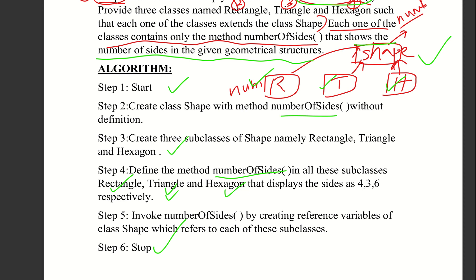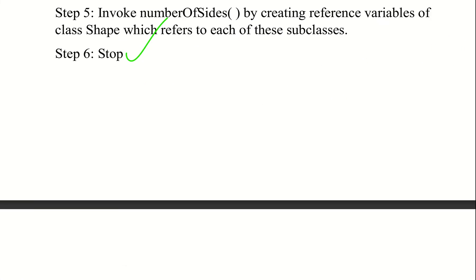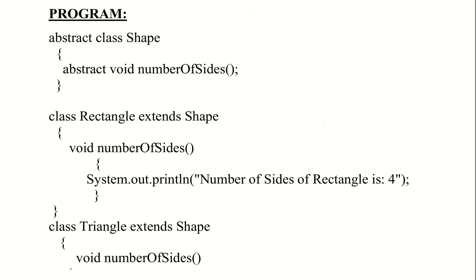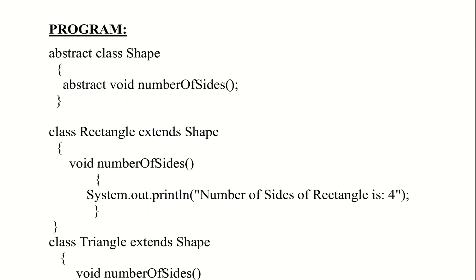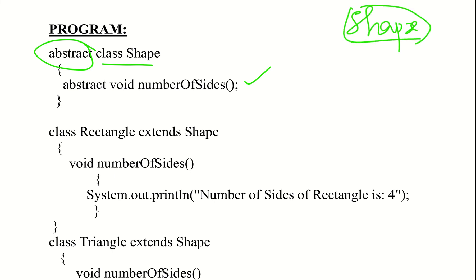We will define this program. We will declare the abstract class Shape — when we declare the Shape class, we need to declare it as abstract using the abstract keyword. So: abstract class Shape. Then we declare the abstract method number of sides.